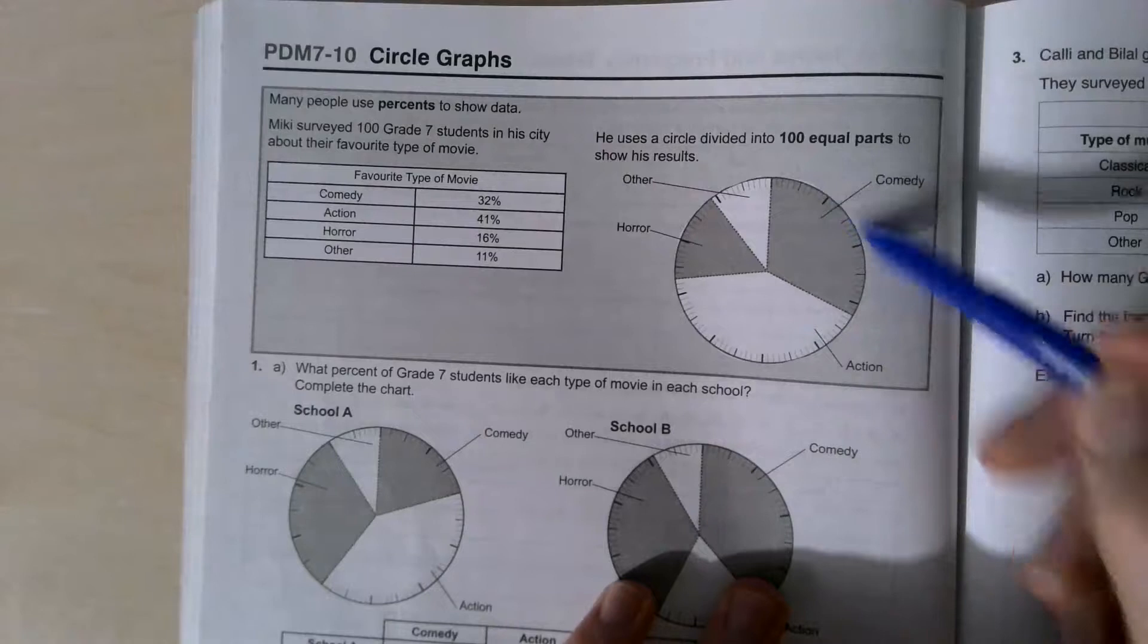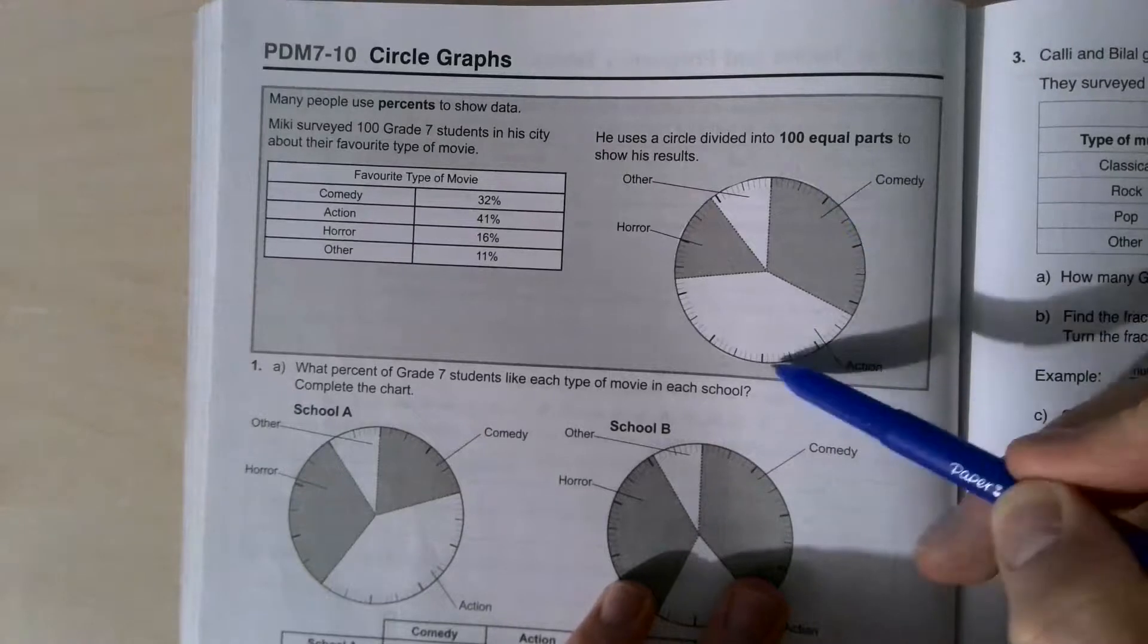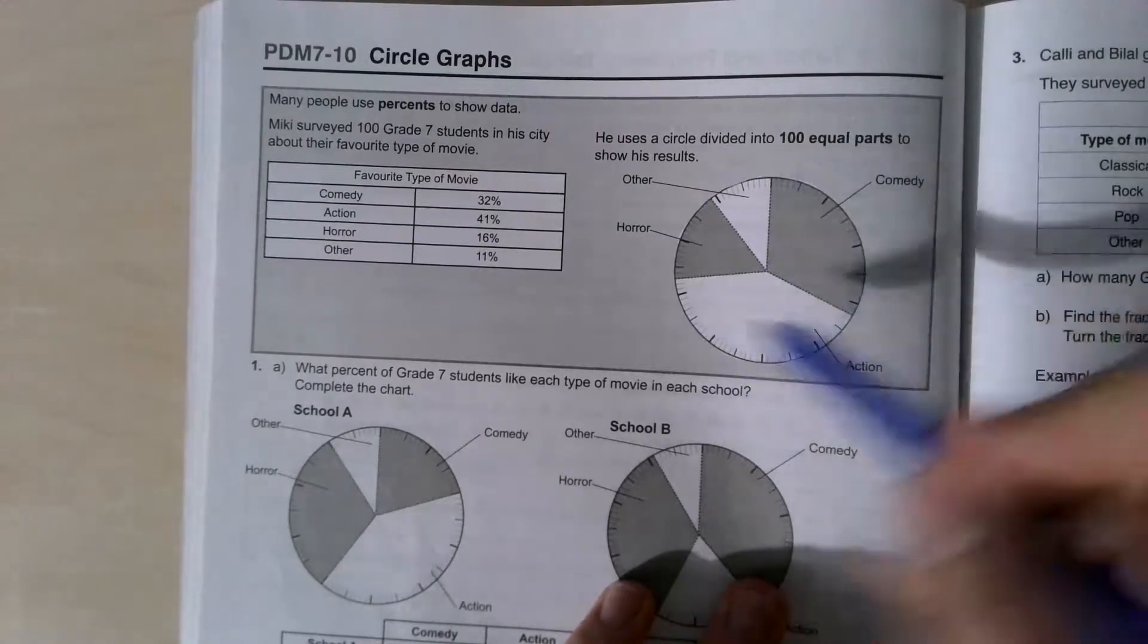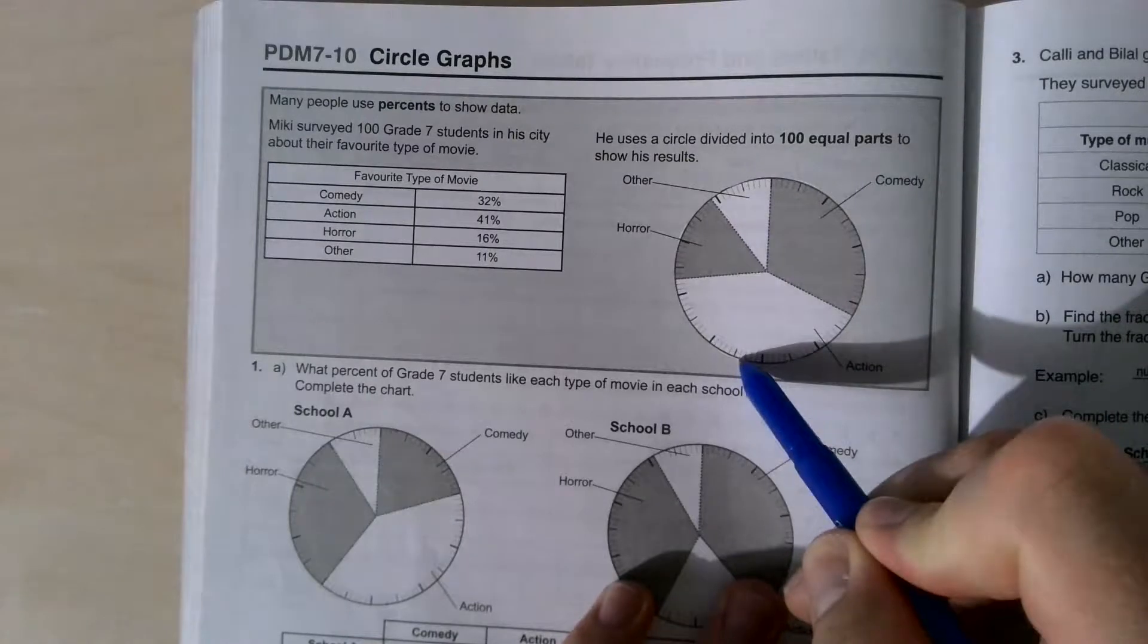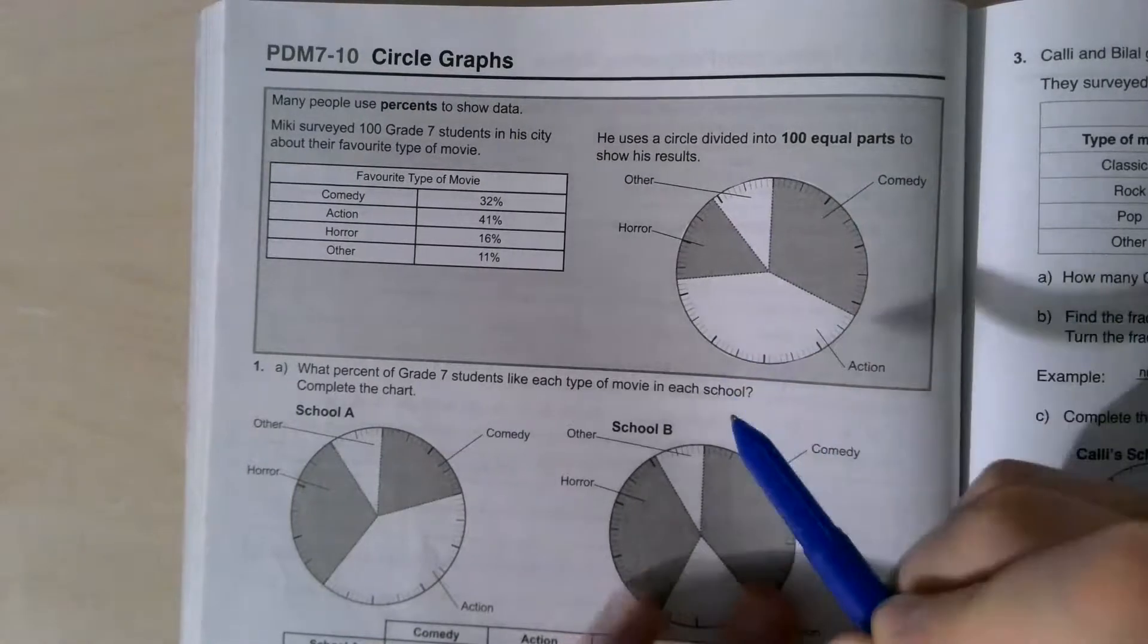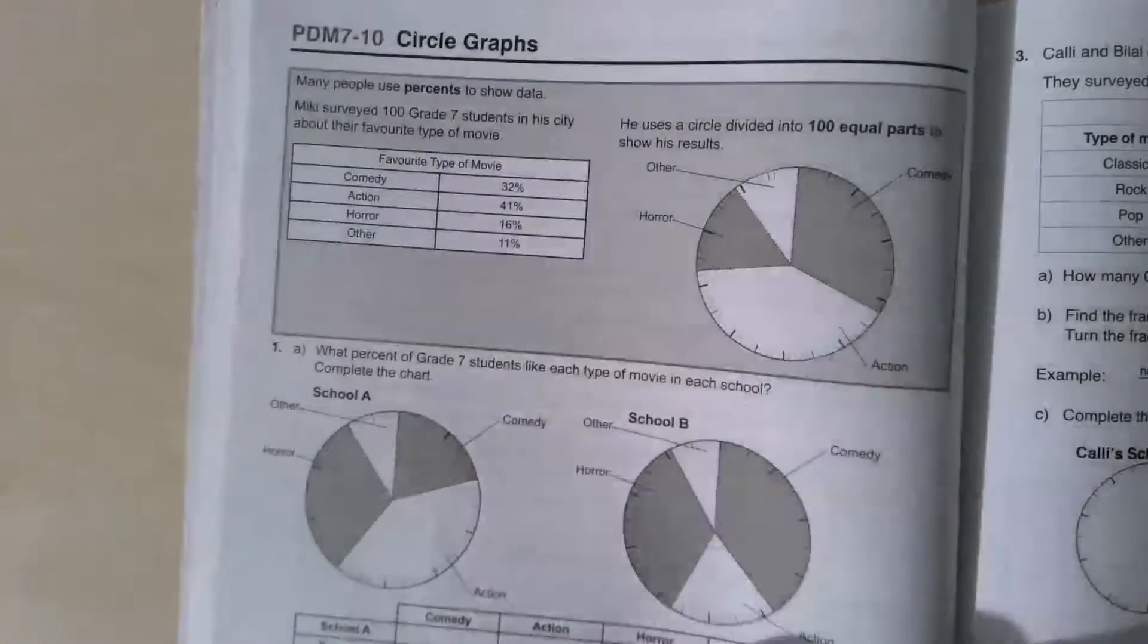So it should be 10, 20, 30, 40, 50, and then you keep going around. So little guys, every little guy is 5, every little tiny guy is 1, and then the bolder guys are every 10, just to make it easier for you to count.